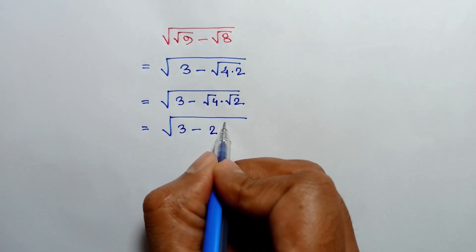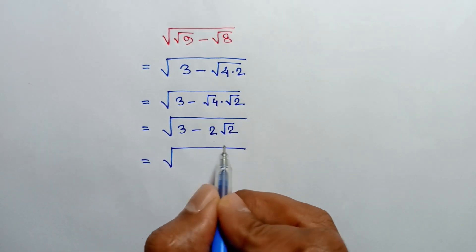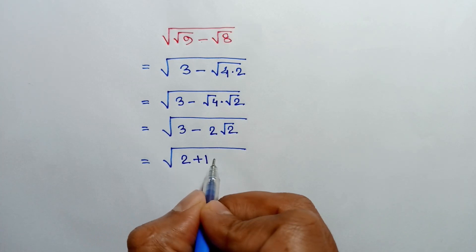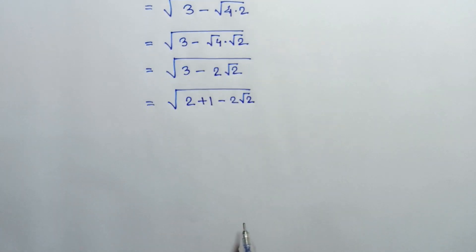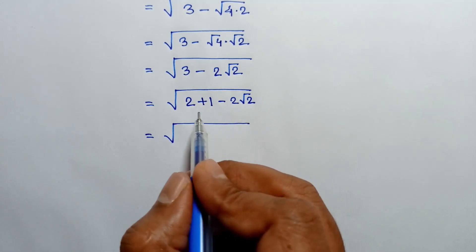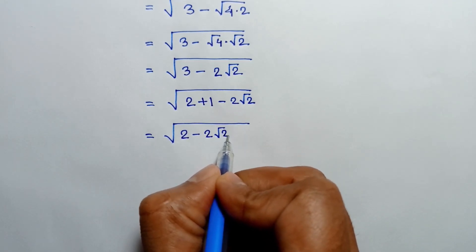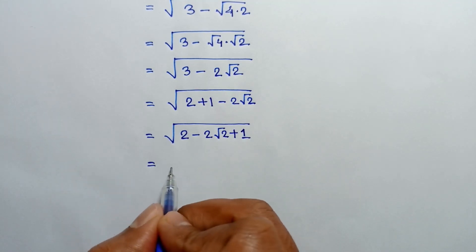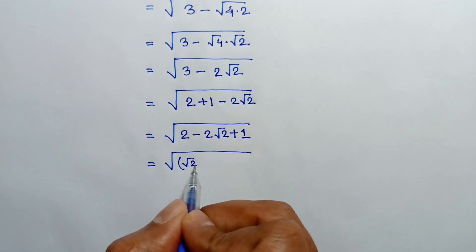So we have square root of 3 minus 2 times square root of 2. Now, 3 can be written as 2 plus 1, so rearranging we get 2 minus 2 square root of 2 plus 1, which equals square root of 2 whole square minus 2 times square root of 2 times 1 plus 1 squared.